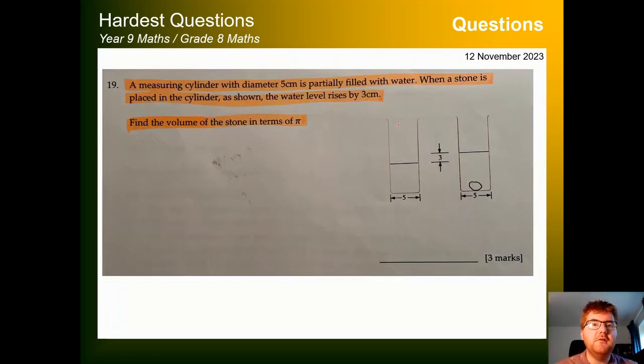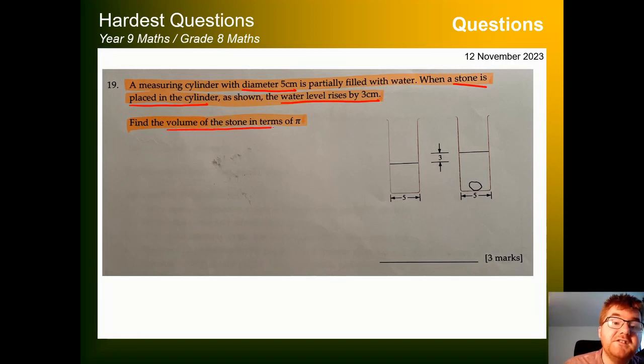Right, on to the second question. And this is a bit more conceptual rather than lots of working in this particular question. So a measuring cylinder here with diameter 5 centimeters. Important information, so I'm going to underline that. It's partially filled with water, so the water doesn't go all the way to the top. When a stone is placed in the cylinder, so this stone here is placed in, the water level rises by 3 centimeters. And from this information somehow, we're supposed to find the volume of the stone in terms of pi. So the skills in grade 8 maths and year 9 maths is to make sure you develop your ideas in terms of pi, not going to the calculator straight away, but also thinking about how we can keep it as accurate as possible.